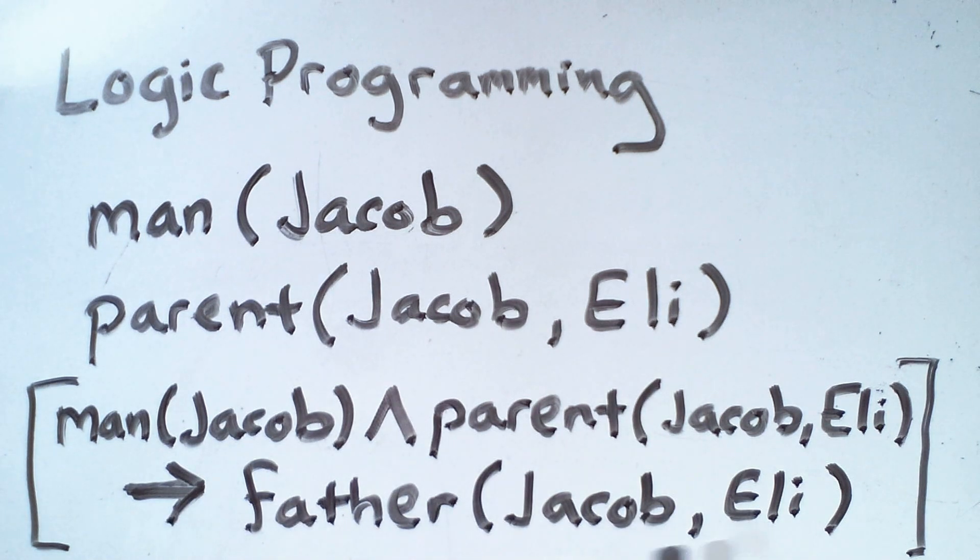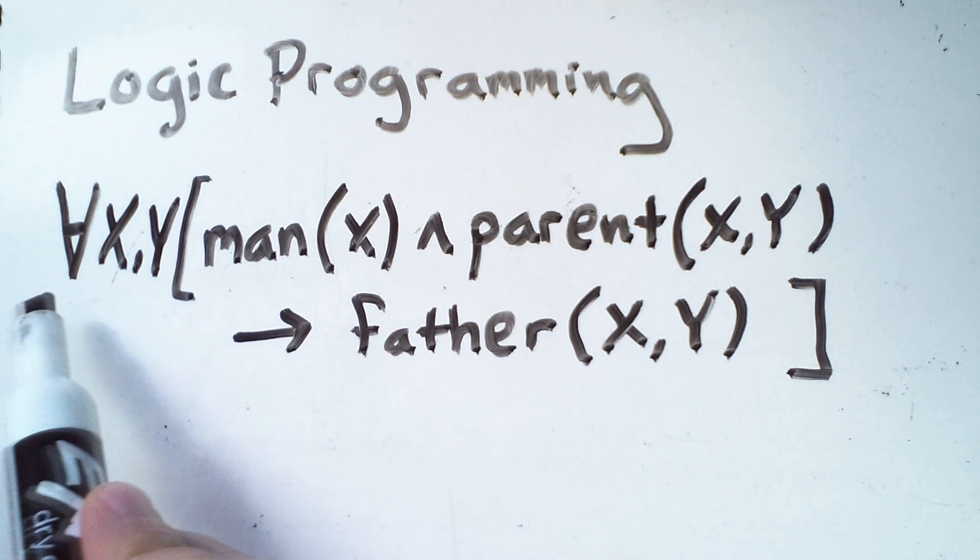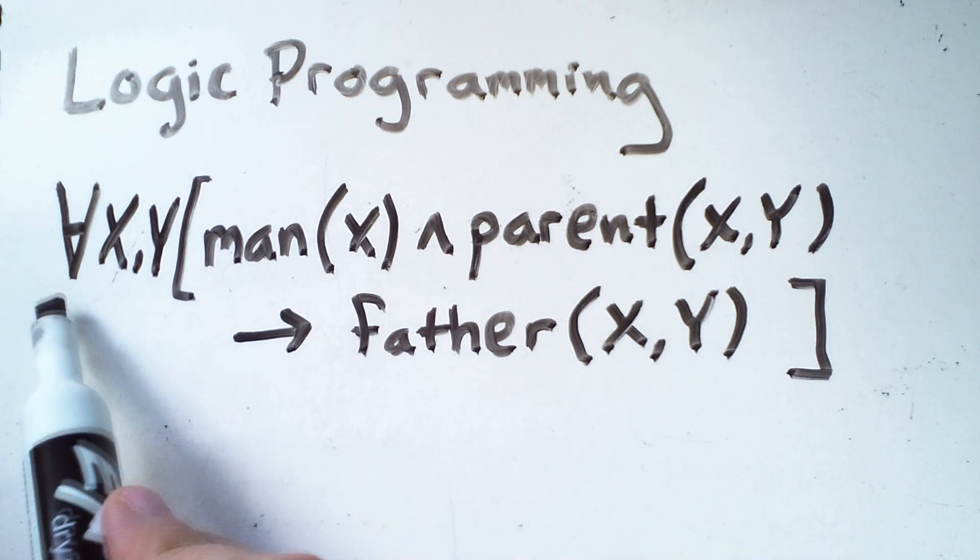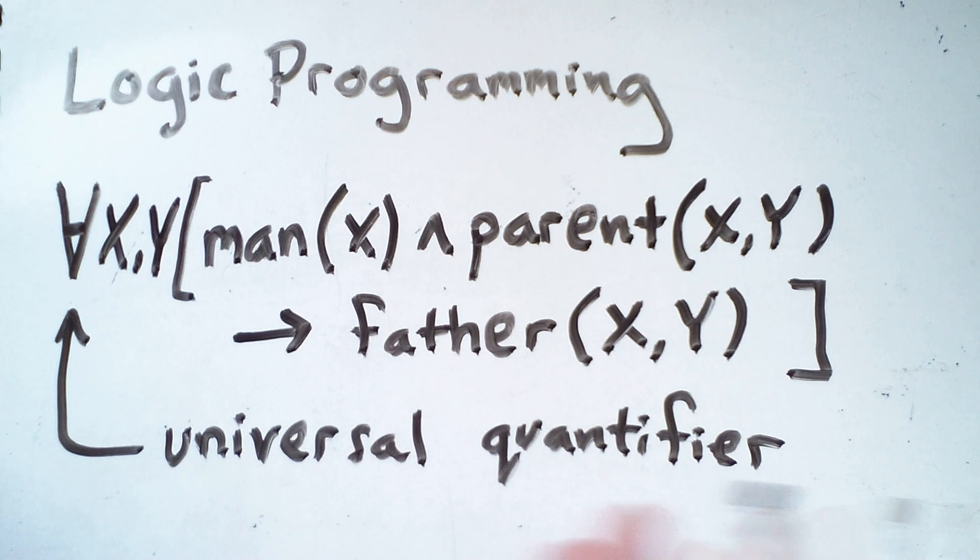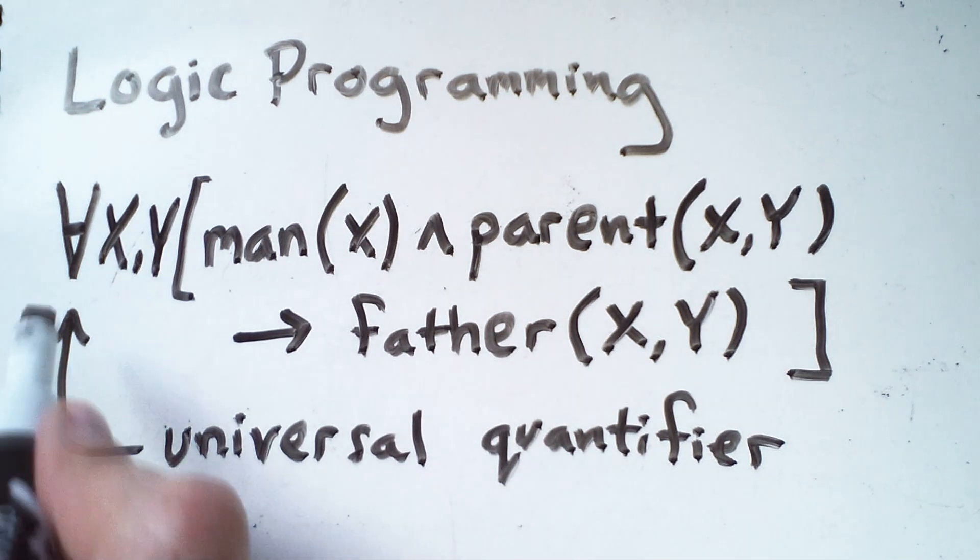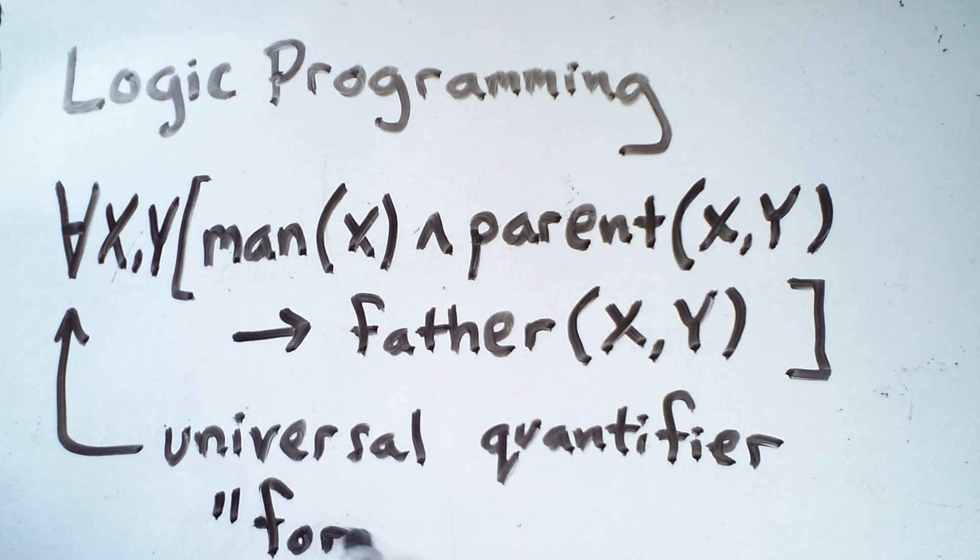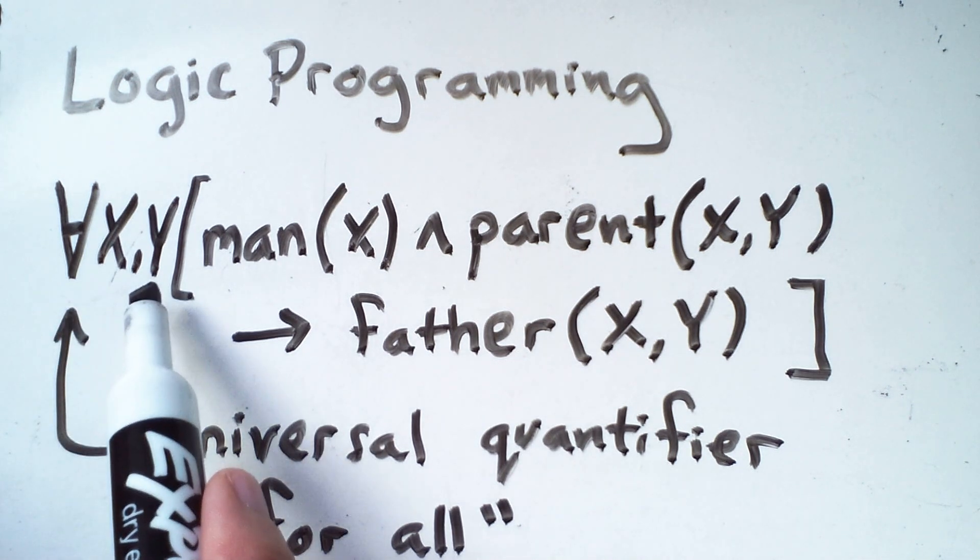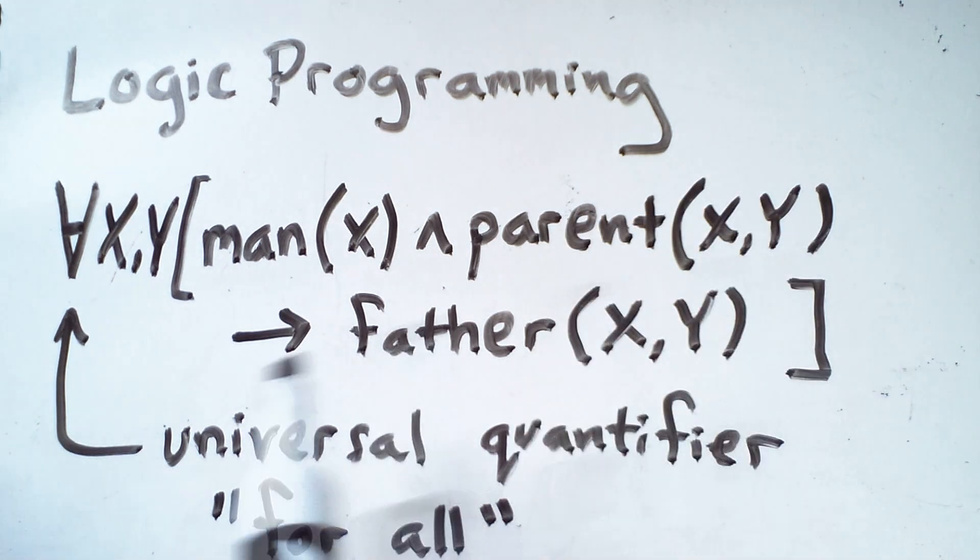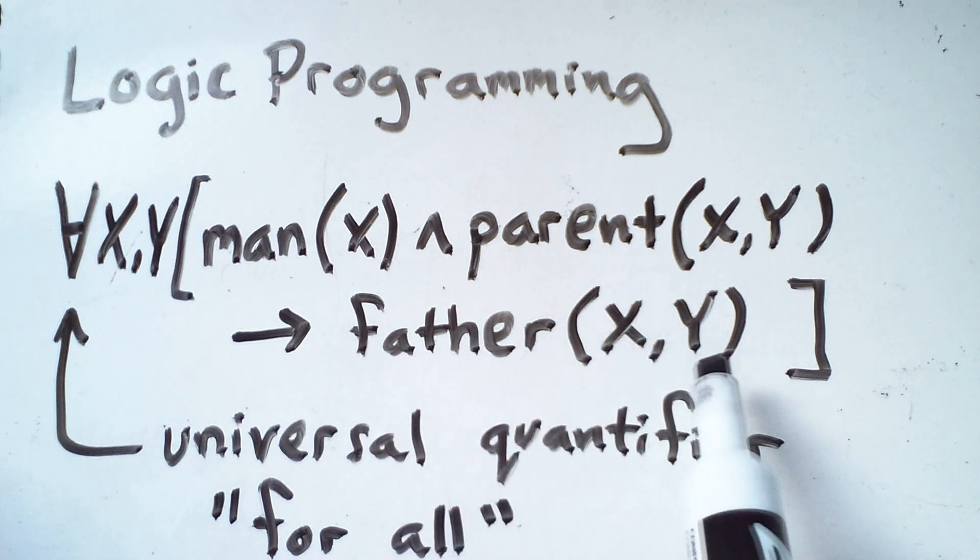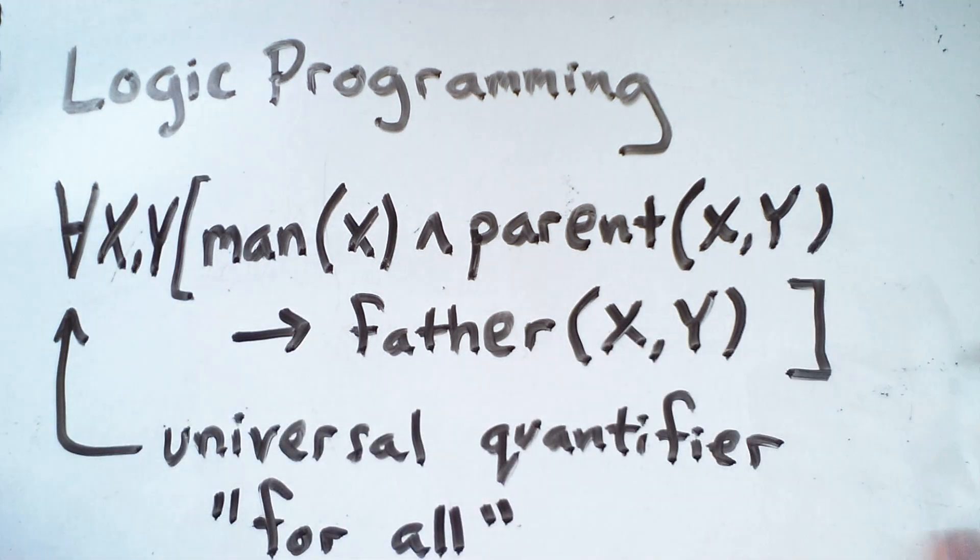Now, this is a statement about specific individuals, but we can generalize this to any individuals like so. So here we're using a symbol that looks like an upside down A. This is known as a universal quantifier. And when you're explaining what this logical sentence means, we often just translate this as for all. To translate this into English, I would say for all values of x and y, if x is a man and x is a parent of y, that implies that x is a father of y.